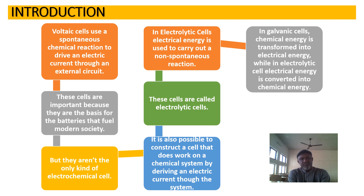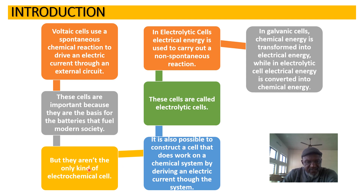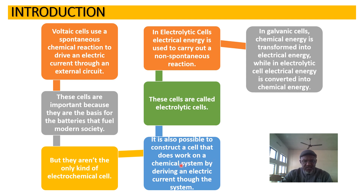Remember we said voltaic cells use spontaneous chemical reactions to drive an electric current to an external circuit. These cells are important because they are the basis for the batteries that fuel modern society. But they are not the only kind of electrochemical cells. It is also possible to construct a cell that does work on a chemical system by driving an electric current through it.